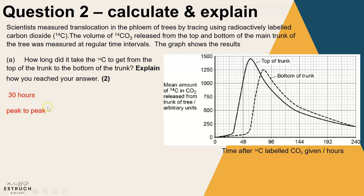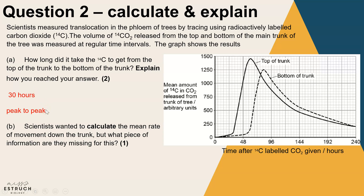That was a calculate-and-explain question combined. The next part asks: scientists wanted to calculate the mean rate of movement down the trunk — but what piece of information are they missing? The rate is product over time and we do have time, however they specified movement down the trunk, so the missing piece is the distance — the length of the trunk. The units would therefore be volume of CO₂ per distance per unit of time (hours), making it a rate with those combined units.